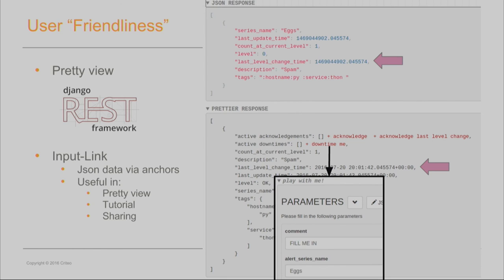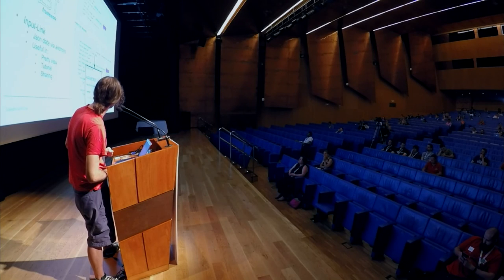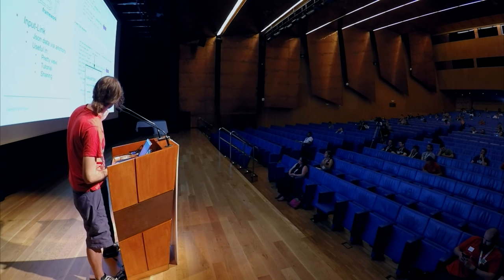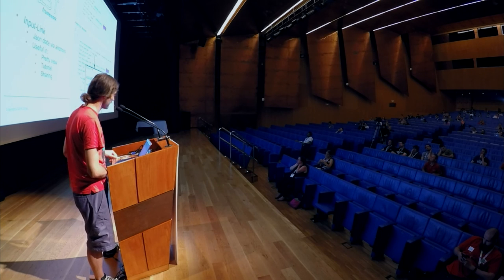Another thing we added to the PrettyView is the ability to add extra information. For instance, the PrettyView can say something about active downtime that's not in the initial JSON response, and moreover, it adds a link near that extra information. That link, which we call the input link, is a link that goes to another operation and pre-fills all the information in the form. So you can navigate between different features in the API without having to type anything. When you click the link, you go to some other operation page and every field is already pre-filled.